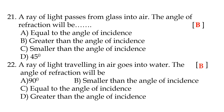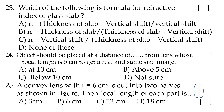Twenty-second question: a ray of light traveling in air goes into water; the angle of refraction will be option B, smaller than the angle of incidence. Twenty-third question: which of the following is the formula for the refractive index of a glass slab? Option B: refractive index = thickness of glass slab divided by (thickness of slab minus vertical shift).